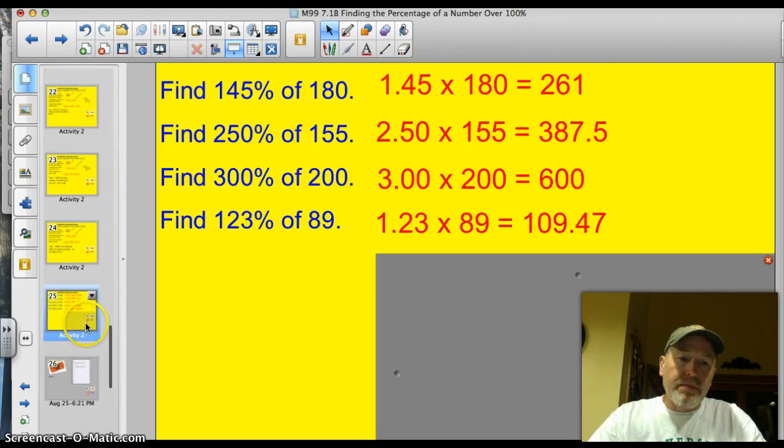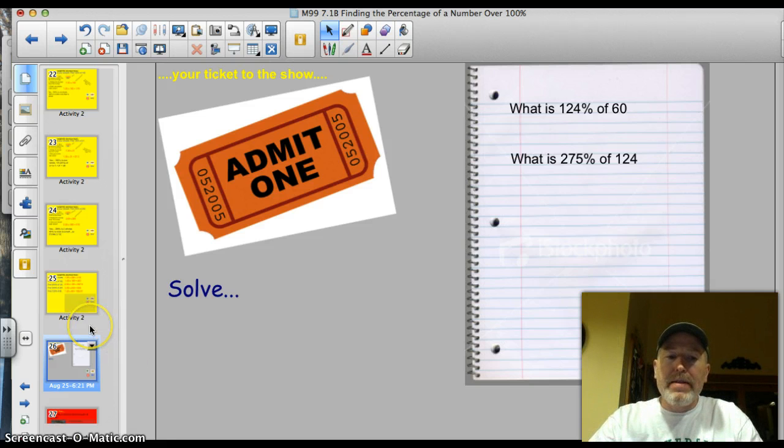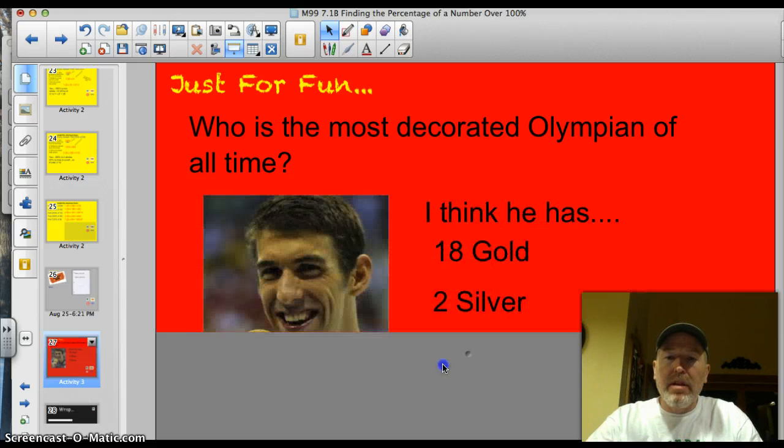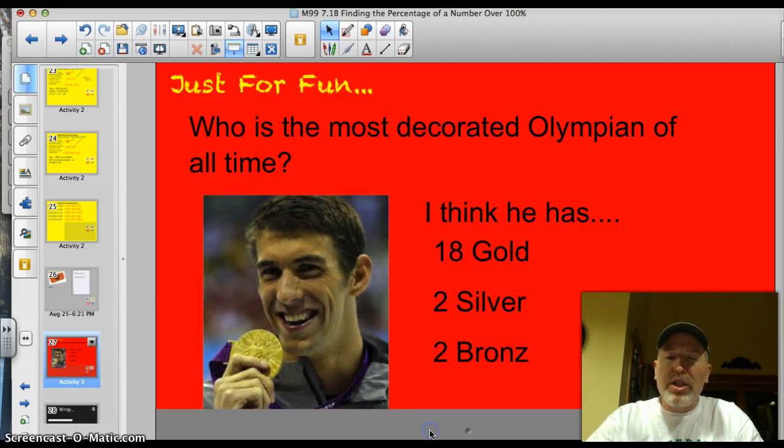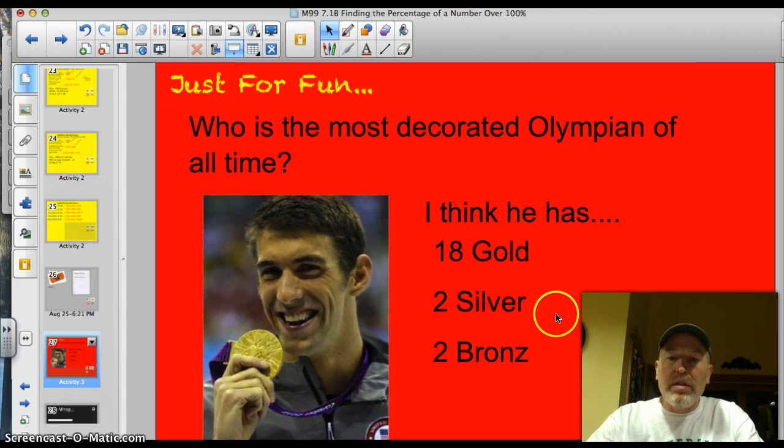Alright. Here we go. The Ticket out the Show. What is 124% of 60? What is 275% of 124? Pretty straightforward target tonight. Let's get to the trivia question. Who is the most decorated Olympian of all time? Survey says Michael Phelps. And I'm pretty sure he's got a total of 22 medals, 18 gold, 2 silver, and 2 bronze. If I'm wrong on that, correct me and I'll give you a treat tomorrow. Alright. Thank you so much. Have a good evening.